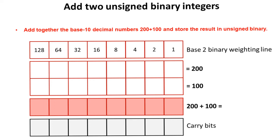Let's try one more. So let's add together the base 10 decimal numbers 200 and 100 and store the result as an unsigned binary integer. So again we have to write out the numbers 200 and 100. Now you can double-check this but I'm just going to write them out. We've got 1, 1, 0, 0, 1, 0, 0, 0 and we've got 0, 1, 1, 0, 0, 1, 0, 0.